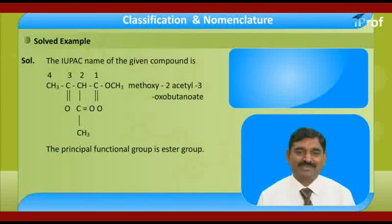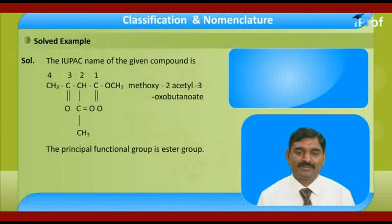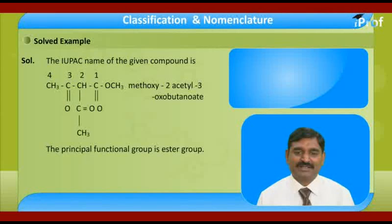Confirming the IUPAC name of this ester compound: it is an ester with a 4-carbon main chain. The second carbon is attacked with acetyl and the third carbon is attacked with oxo. The name of this compound is methyl 2-acetyl-3-oxo-butanoate.